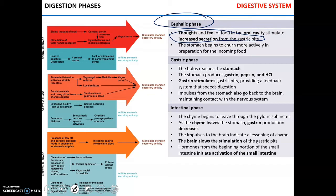Lack of appetite or depression will inhibit gastric digestion in the cephalic phase. Once the bolus reaches the stomach, the gastric phase ensues. Stomach distension, elevated stomach pH due to the presence of food, and the hormone gastrin — produced by the stomach in response to the food bolus — all stimulate stomach activity. Decreased stomach pH and excessive acidity, as well as emotional distress, will inhibit digestion in the gastric phase.